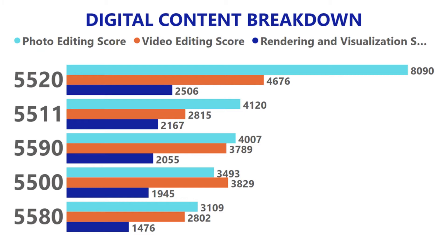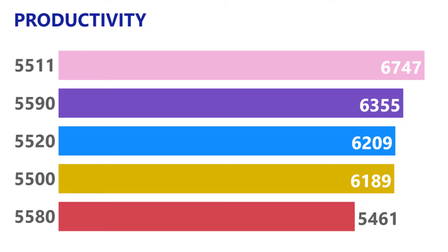Looking at the productivity scores, you'll see that in terms of productivity the 5520 is only in the middle of all of these systems, and we'll see in the breakdown why that is. The 5511 comes out on top, and again there's a slight anomaly with the 5590.